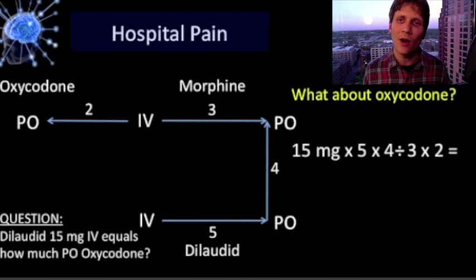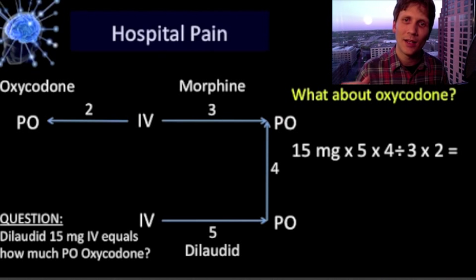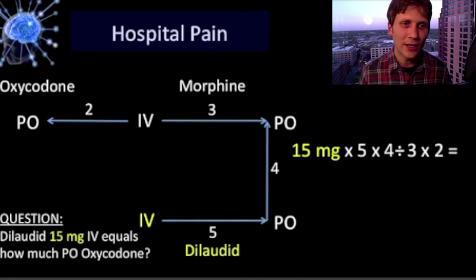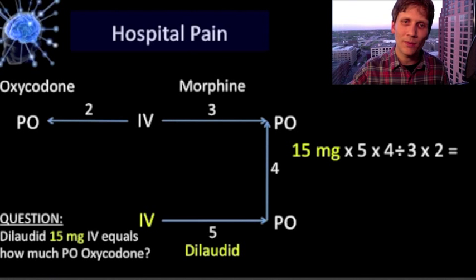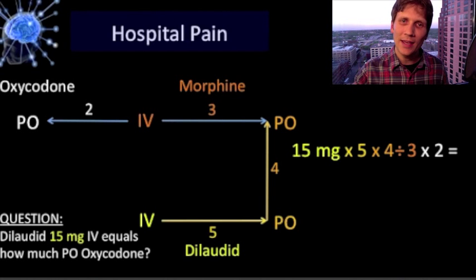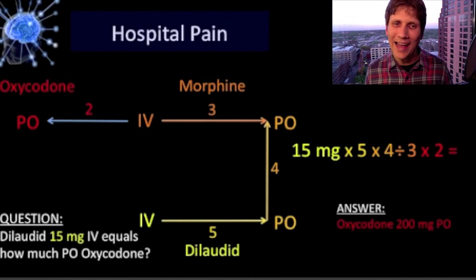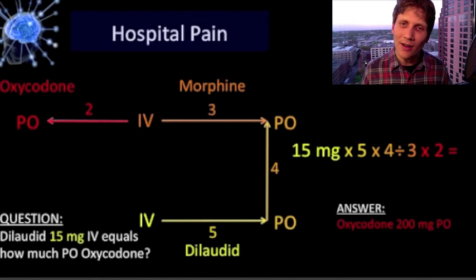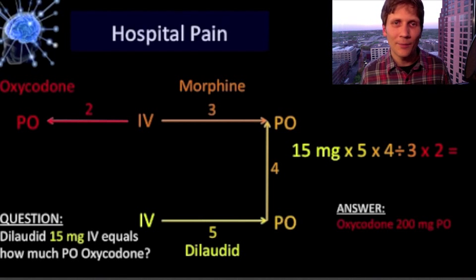Example: dilaudid 15 milligrams IV equals how much PO oxycodone? Take 15, multiply by five to get from IV dilaudid to PO dilaudid, then multiply by four to get from oral dilaudid to oral morphine, then divide by three going against the arrow to IV morphine, then multiply by two for oxycodone. So 15 milligrams of IV dilaudid equals 200 milligrams of oxycodone.